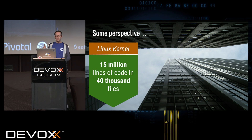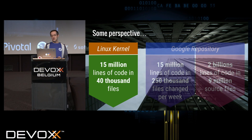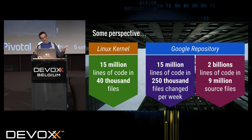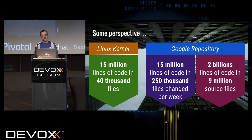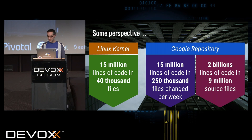Just to give some perspective: if you look at the Linux kernel, that's about 15 million lines of code in 40,000 files. The Google repository also has about 15 million lines of code, but in 250,000 files changed per week — that's not the whole thing, that's just per week. And two billion lines of code in nine million files total.